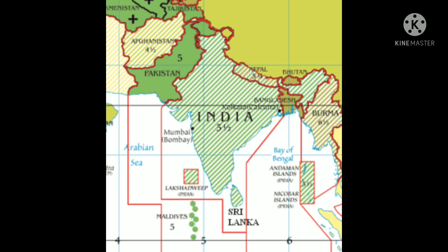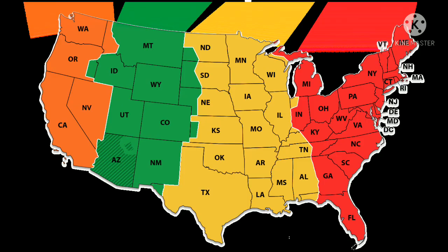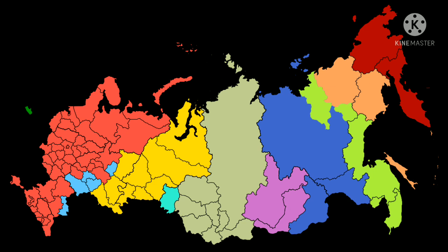Some countries would have more than one time zone with less than one hour division. For example, the time difference from the east end to the west end of India is 2 hours. In such situations, some countries choose the time along one meridian passing through their territory and follow that time for the whole country — this is called standard time. For India it is Indian Standard Time, for Pakistan it is Pakistan Standard Time, and so on. Some countries follow different time zones; for example, the USA has 9 time zones whereas Russia follows 11 time zones.